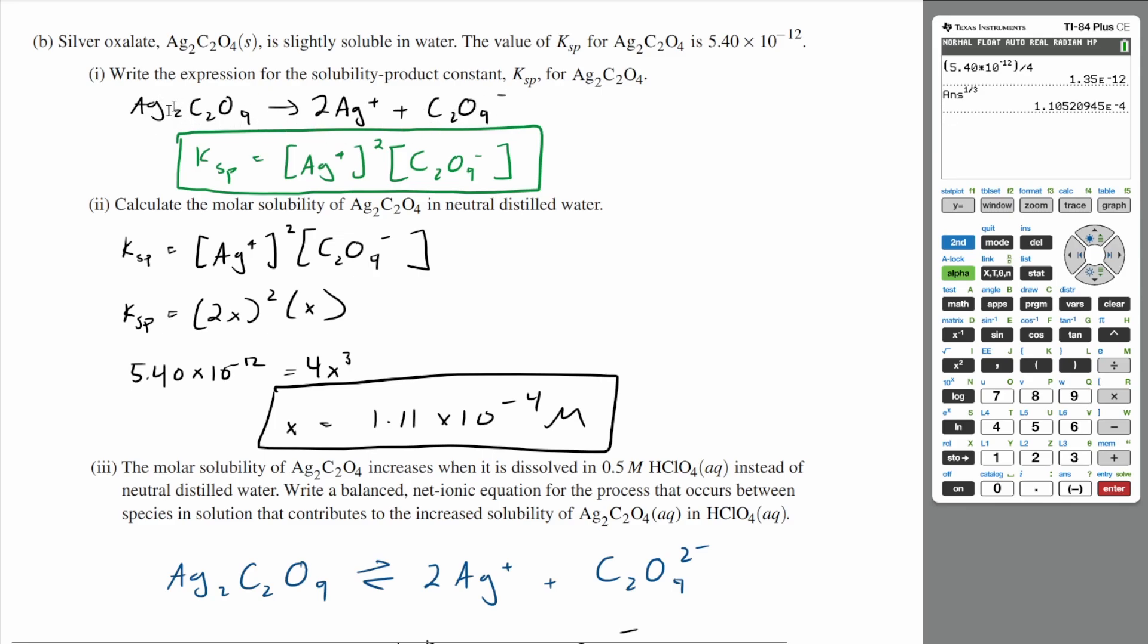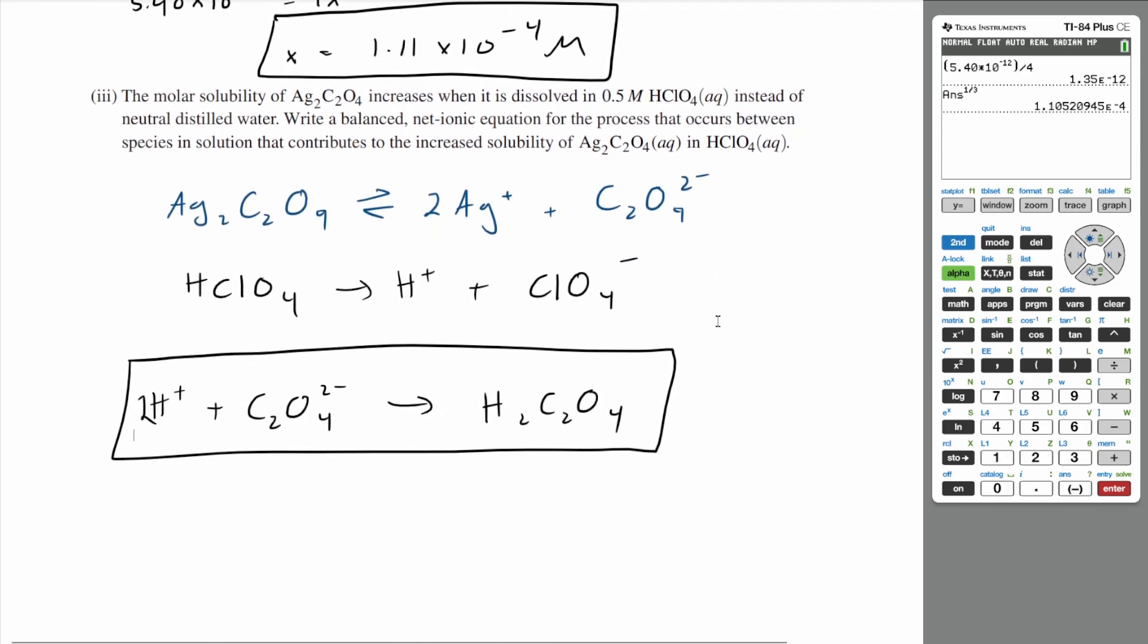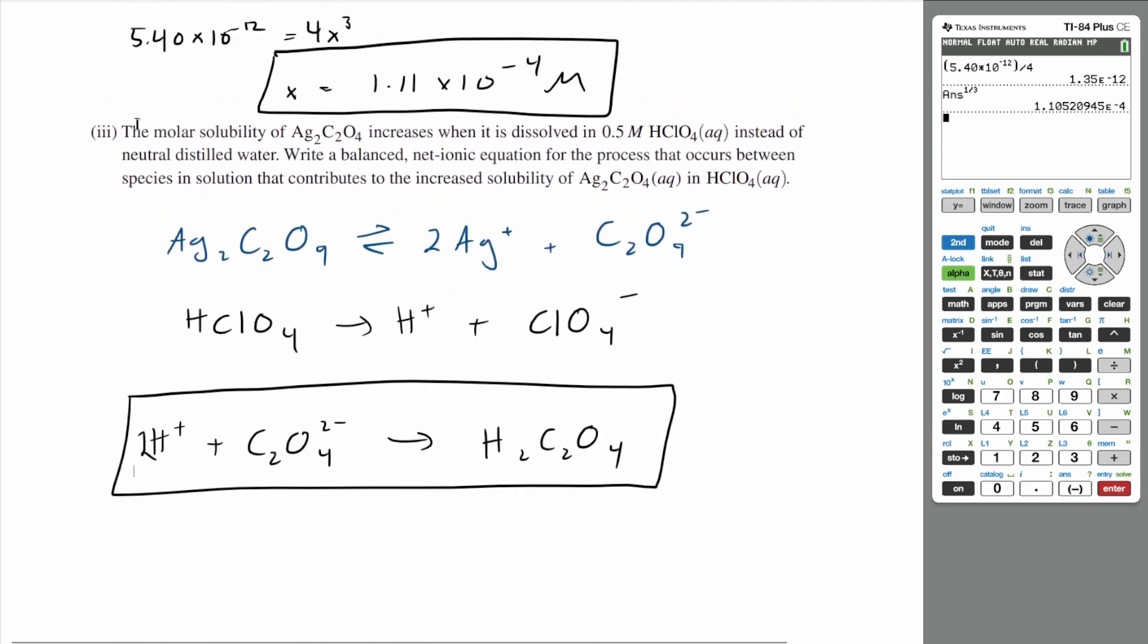And what the forward reaction does is that it dissociates the silver oxalate. So by using up the oxalate, you actually have more dissociation of the silver oxalate, which increases the solubility overall. So that's why this reaction is why dissolving silver oxalate in perchloric acid would actually increase the molar solubility.